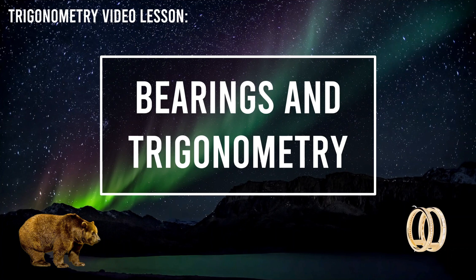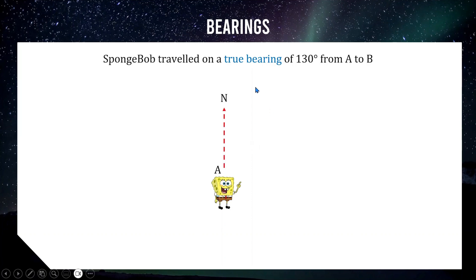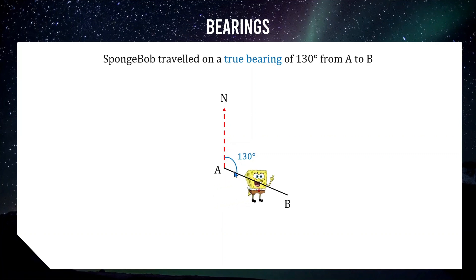Before we start tackling some questions involving trigonometry, we need to get an understanding of the two types of bearings in this course and how we find them. Here's a quick example involving SpongeBob traveling on a true bearing of 130 degrees from A to B. Starting at point A — the 'from' tells you where to start and the 'to' tells you where to look. At point A, SpongeBob points himself north. A true bearing is just a clockwise rotation from north, so he rotates 130 degrees clockwise and travels along that line to reach point B.